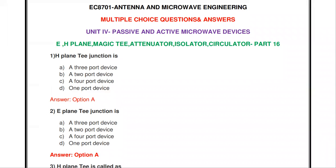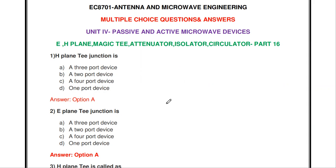Welcome to my channel. Today we are going to discuss multiple choice questions and answers on the topics of T-junction, E-plane junction, H-plane junction, magic T, attenuators, microwave attenuators, isolators, circulators, and more. I have already posted 15 videos for antenna and microwave engineering in this format. Links are in the description box.